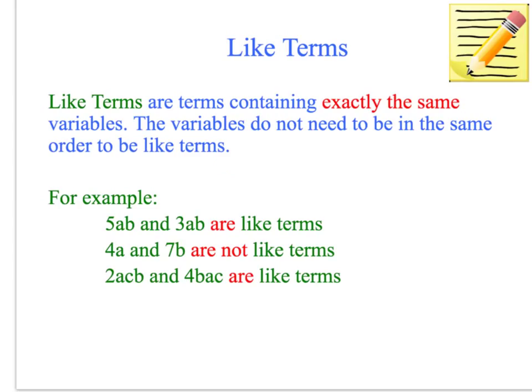Now like terms are terms containing exactly the same variables. The variables don't need to be in the same order to be like terms, but they need to be exactly the same amount of them. So we're only talking about the variables here, we're not actually talking about the coefficients. These variables a and b, they are like terms even though their coefficients are different, so you've got a 5 and a 3, we're just looking at the variables when we're talking about like terms.